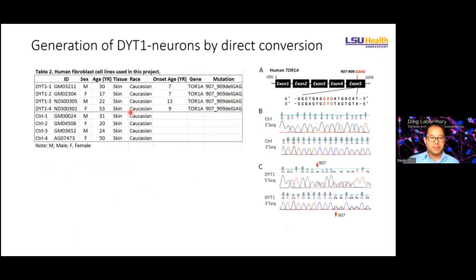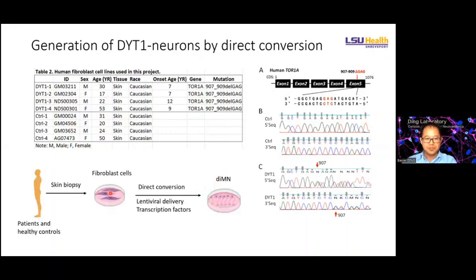How this protein contributes to disease is not clear. So we collected four patient cell lines and verified that each patient is caused by a specific gene mutation in the TOR1A gene. We also have healthy, sex-matched controls. We used the direct conversion method to generate patient-specific motor neurons to see any changes compared to controls.